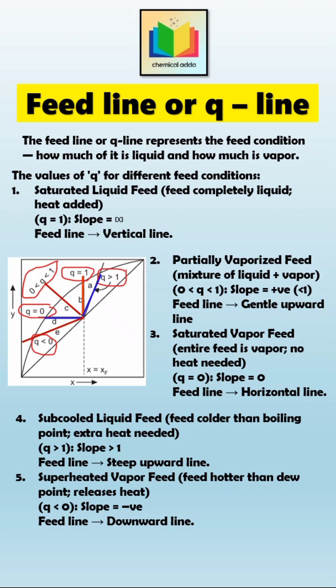Therefore, as the feed condition changes from liquid to vapor, the Q line tilts from steep upward to horizontal and then downward. Which shows how the energy condition of the feed affects the column's operation.